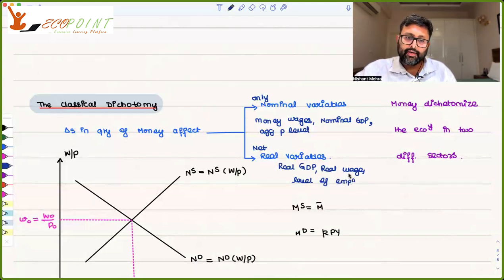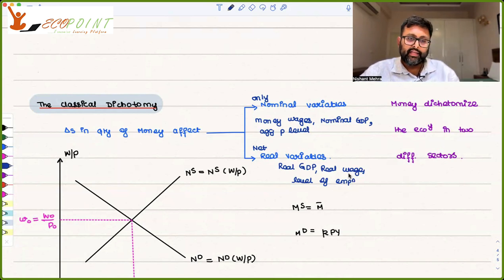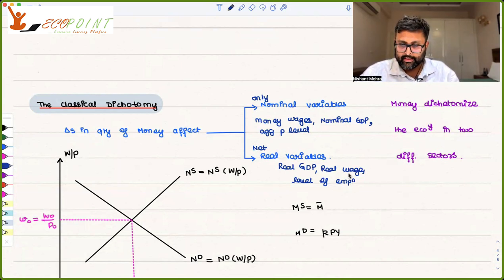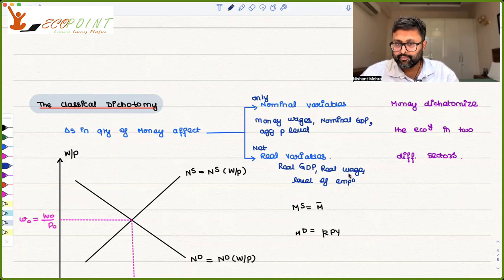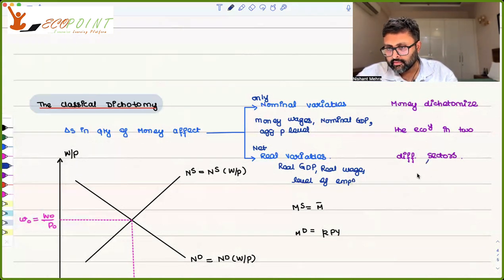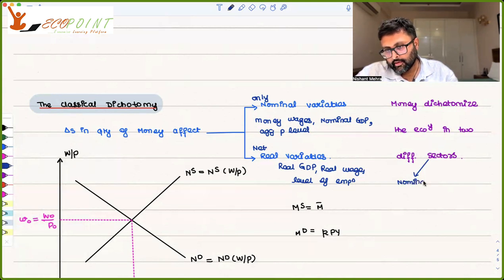So in simple terms, it means that money is said to dichotomize the economy into two different sectors. One is the nominal sector, and the other one is the real sector.